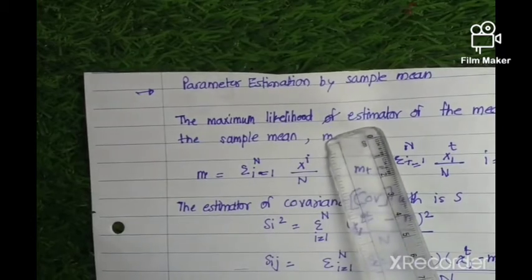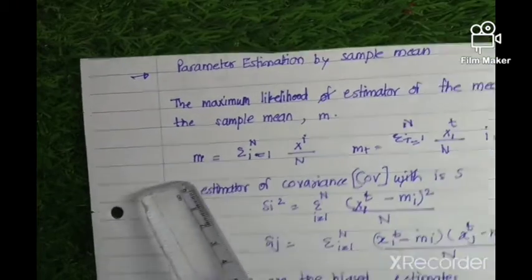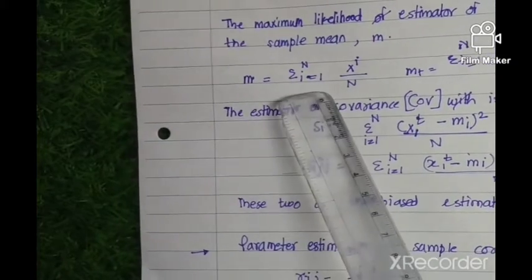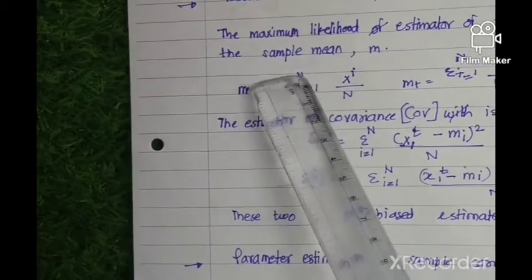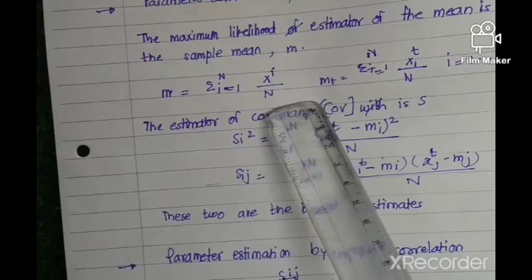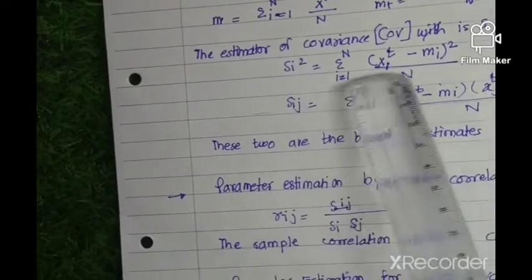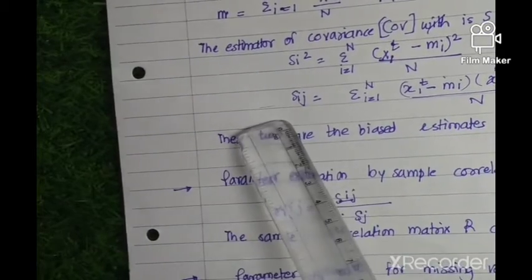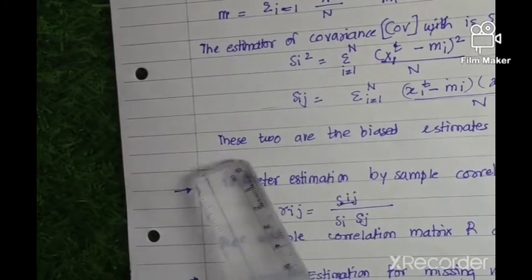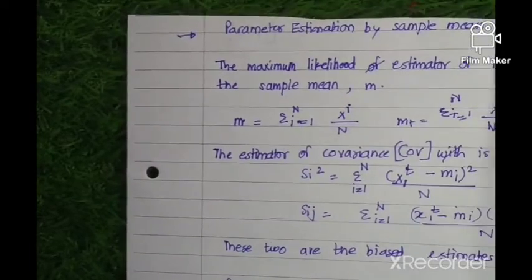The maximum likelihood estimator of the mean is the sample mean, called m. It is the average of that particular class from i=1 to m, since the mean represents that class. We can calculate the sample mean with the help of the covariance matrix as shown in this equation. These are biased estimations giving parameter estimation of the sample mean.